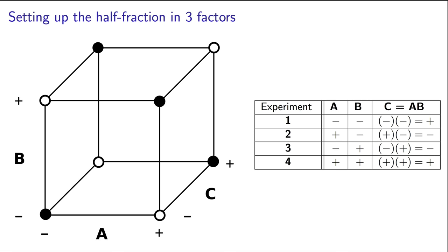We write it out as C equals A times B. In fact, we say generate factor C as A times B. So there we have that factor C is equal to plus, minus, minus, plus for the 4 experiments, the multiplication of the values in column A and column B.